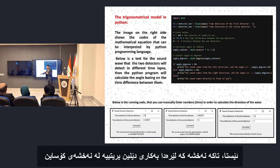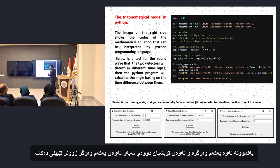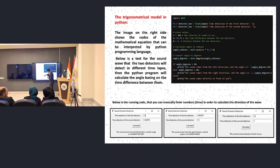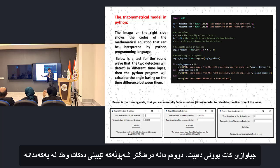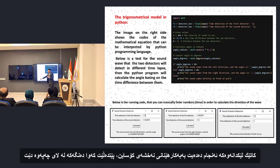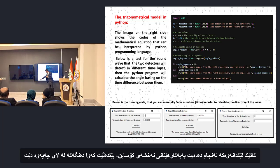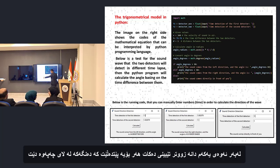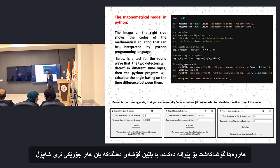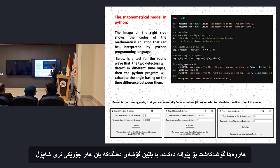For example, this is the first detector and this is the second one. Since the first detector detects the sound wave earlier than the second one, there is a time delay. When you use the cosine function, it will calculate and tell you that the sound comes from the left direction. Since the first one detected first, that's why it tells you the sound comes from the left. It will also calculate the angle of the sound or any type of wave.